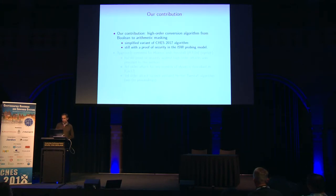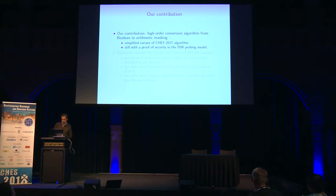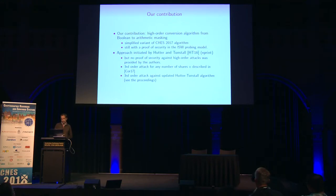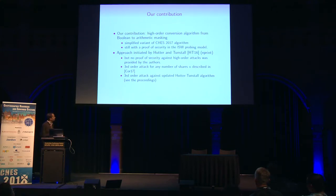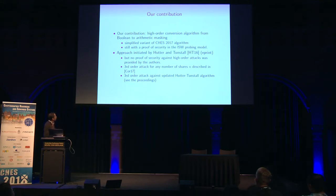The contribution is a simplified variant of the CHS-2017 algorithm, with a proof of security in the ISW probing model. This approach was initiated by Hutter and Tunstall in an imprint paper, but they did not have a proof of security. Last year I described a third-order attack against their scheme for any number of shares, and this year we also have a third-order attack against their updated algorithm.